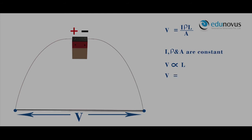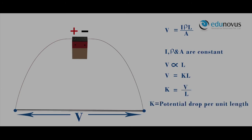V = KL, where K = V/L. K is the potential drop per unit length, or potential gradient.